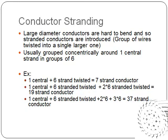Large diameter conductors are very hard to bend, so stranded conductors are introduced — a group of wires twisted into a single large one. They are usually grouped concentrically around one central strand in groups of six. For example, there will be one central strand plus six strands twisted around it, and this is called a seven-strand conductor.